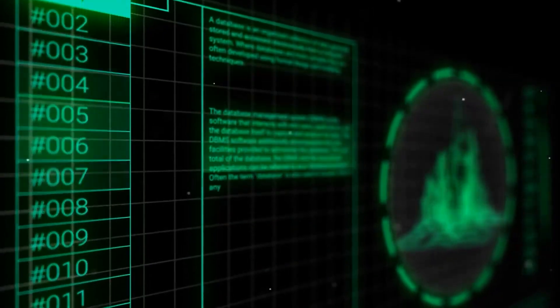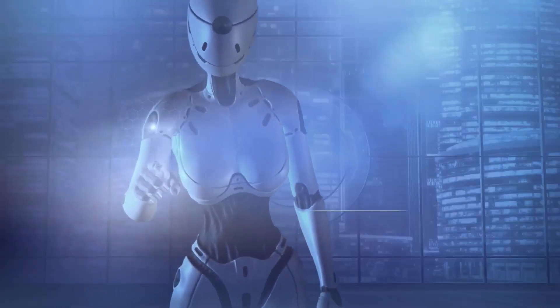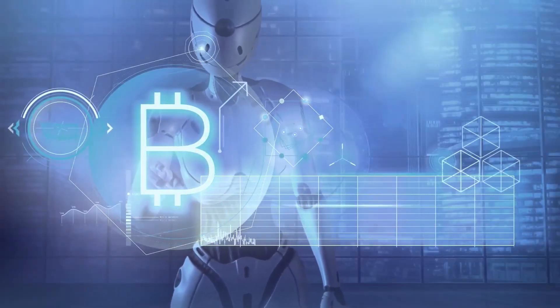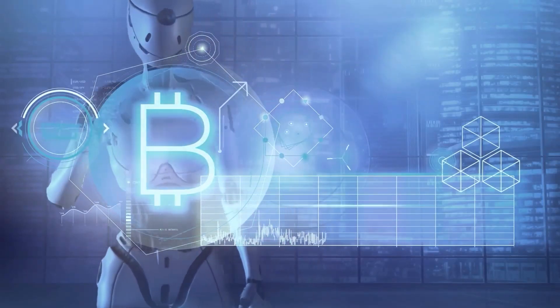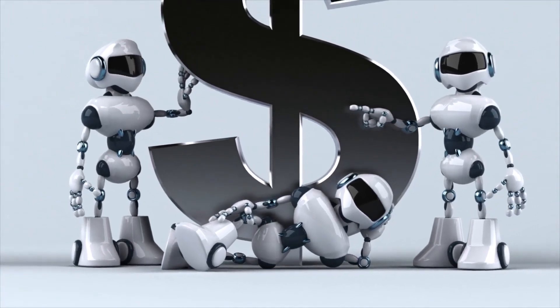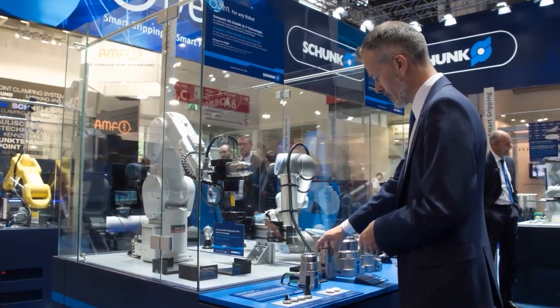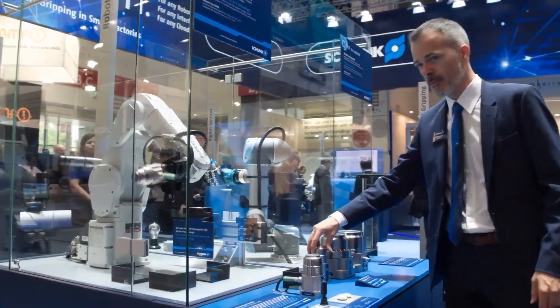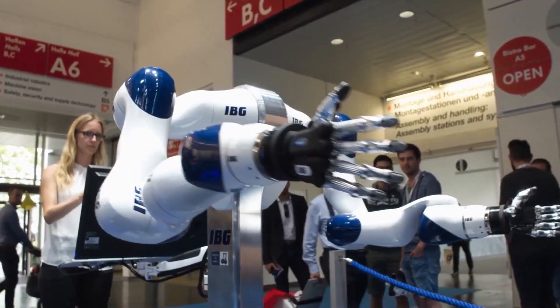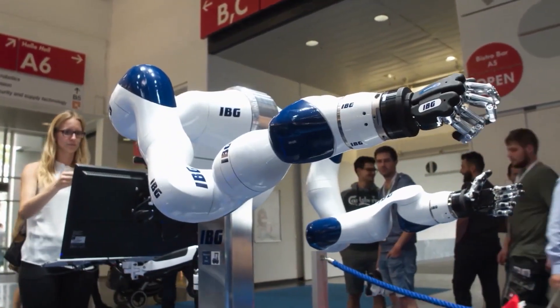Will people be better off than they are now as algorithm-driven artificial intelligence continues to spread? In a survey of experts conducted in the summer of 2018, 979 technology pioneers, inventors, developers, corporate and policy leaders, researchers, and activists responded to this question. That work to artificial intelligence, according to experts, will increase human effectiveness while also posing a threat to human autonomy, agency, and skills.